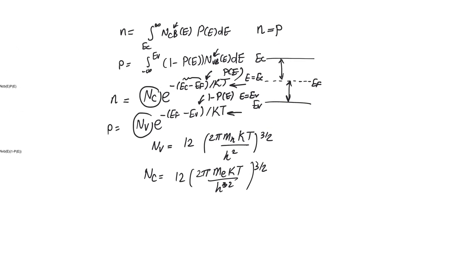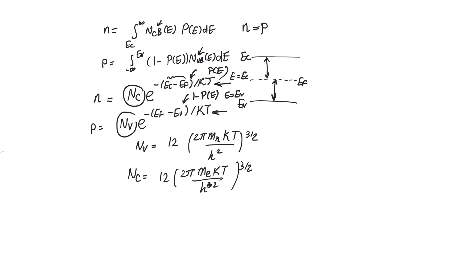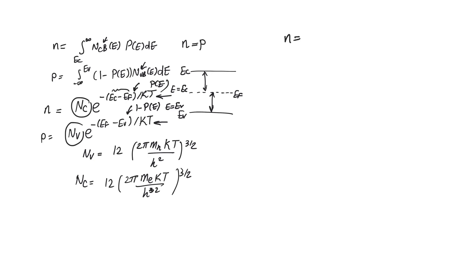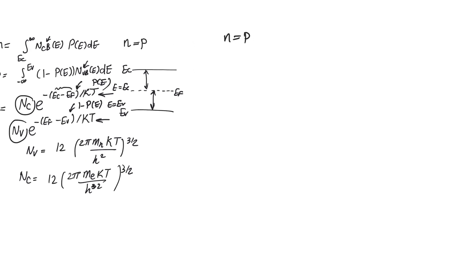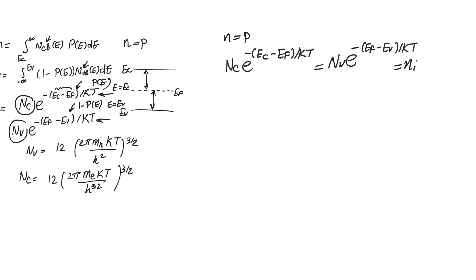Let's equate N and P. We have N_C · e^(-(E_C - E_F)/kT) = N_V · e^(-(E_F - E_V)/kT), and both are equal to a certain number N_I. N_I is called the intrinsic carrier concentration — intrinsic meaning pure. It is the concentration of carriers in pure, intrinsic silicon. We don't need to specify which type of carrier, because both electrons and holes have the same concentration in pure silicon.